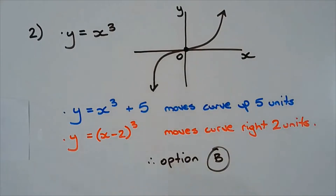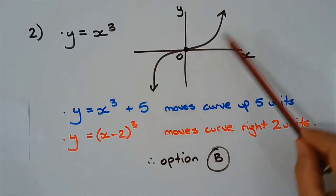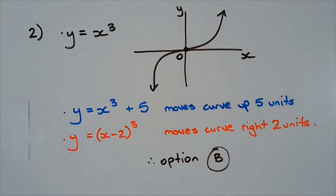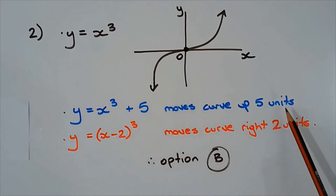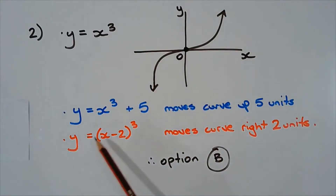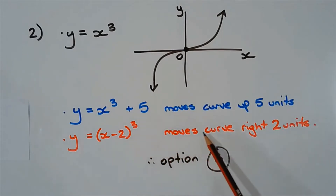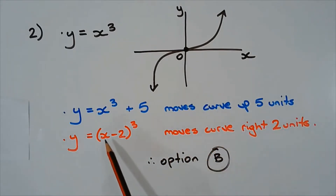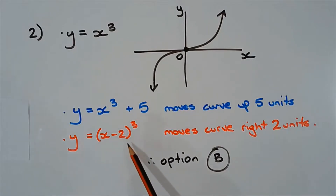Consider y equals x cubed — its graph is a cubic curve through the origin. We'll consider the vertical and horizontal translations in isolation. y equals x cubed plus 5 moves the curve upward by 5 units, adding 5 to all y-coordinates. y equals (x minus 2) cubed moves the curve to the right 2 units, found by solving x minus 2 equals 0, giving x equals 2. So that's a horizontal translation to the right of 2 units.